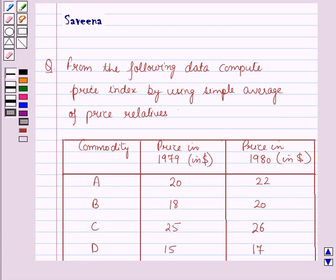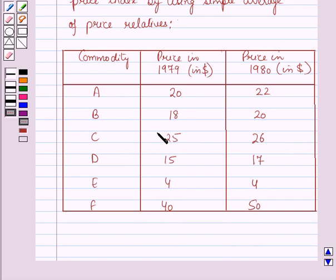Hello and welcome to this session. In this session, we will discuss a question which says: from the following data, compute price index by using simple average of price relatives. And here this data is given to us.